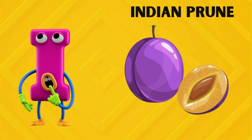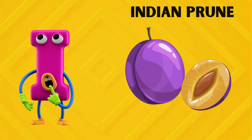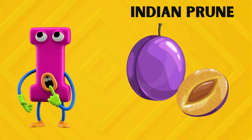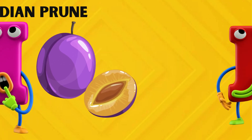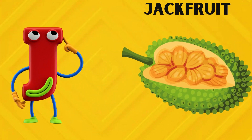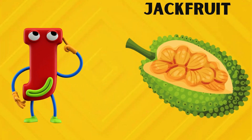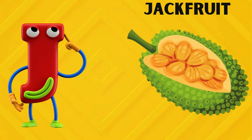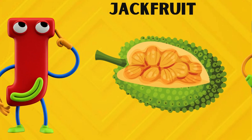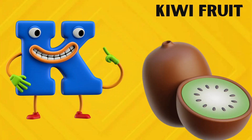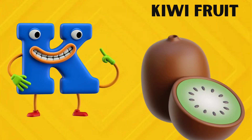I is for Indian Prune. I. Indian Prune. J is for Jackfruit. J. Jackfruit.